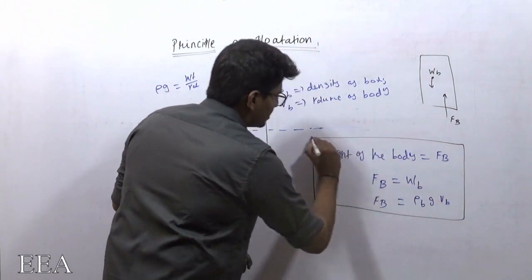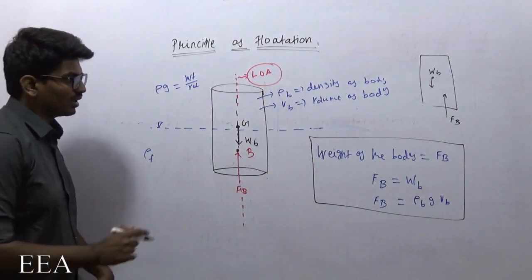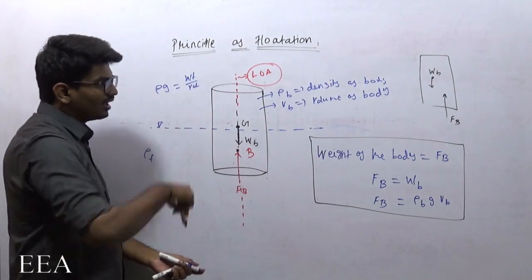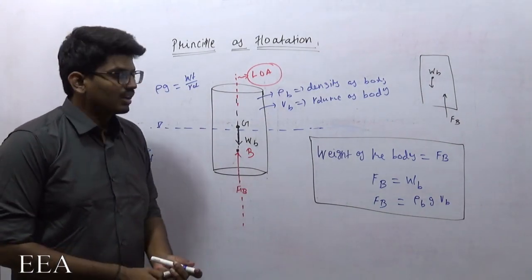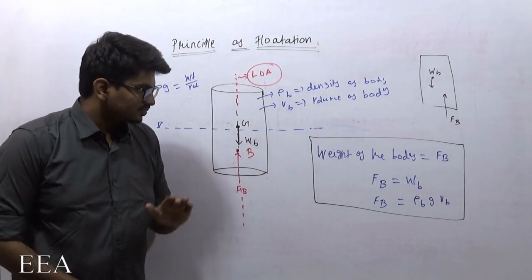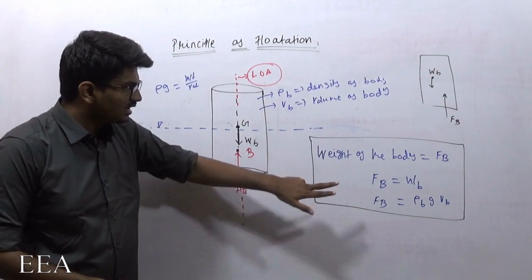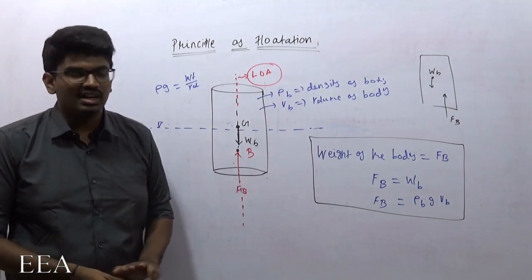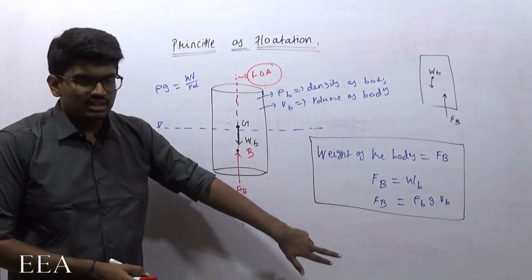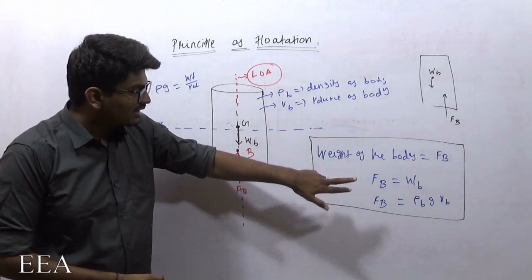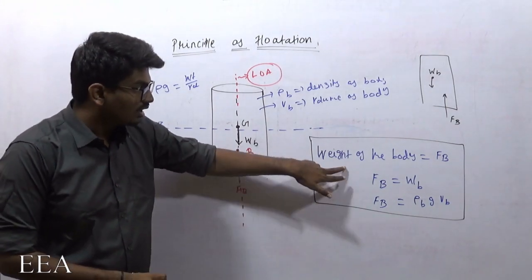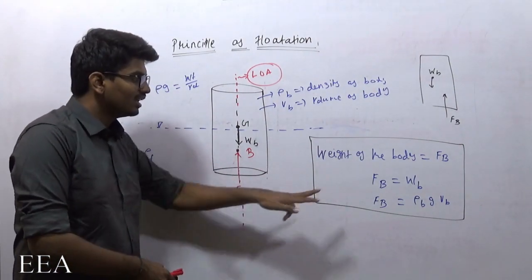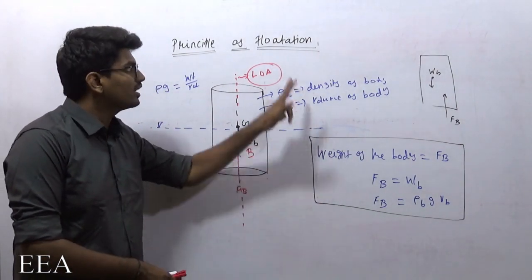That is the condition for flotation. The next condition is that F_b and W_b should lie in the same line of action. This is the condition for flotation only if the body has to float, and this is not always true — there is no guarantee that the weight of the body will always equal the buoyancy force.